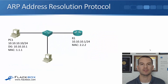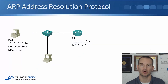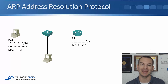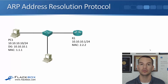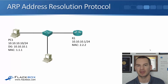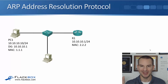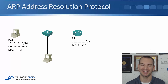The next security mechanism that we can implement on our access layer switches is DAI, Dynamic ARP Inspection. Before we look at what that does, let's have a quick review of what ARP does itself. ARP is the Address Resolution Protocol. We covered this in detail already, so you should know this already.